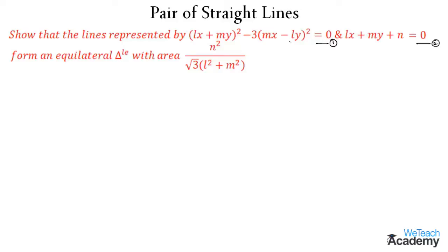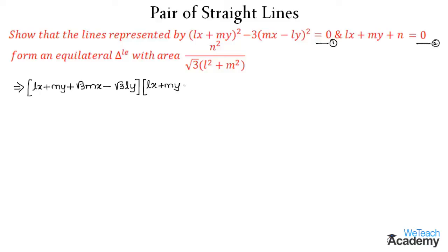Now let us try to find the pair of straight lines using equation 1. This term is in the form of A² minus B², so we can write 3 as (√3)². Using that formula, we get (L + √3·MX)(LX + MY − √3·MX + √3·LY) = 0.